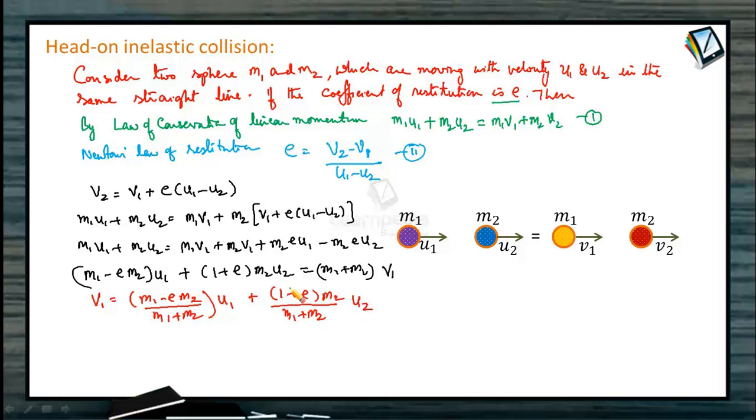In a similar fashion, suppose I substitute the value of v1 from equation 2 and solve it. We can get the value of v2 also. Value of v2 will be equal to 1 plus e times m1 divided by m1 plus m2 into u1 plus m2 minus e times m1 divided by m1 plus m2 into u2. These will be the final velocities, v1 and v2 after collision.